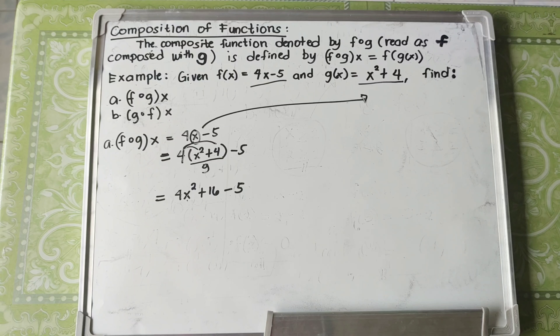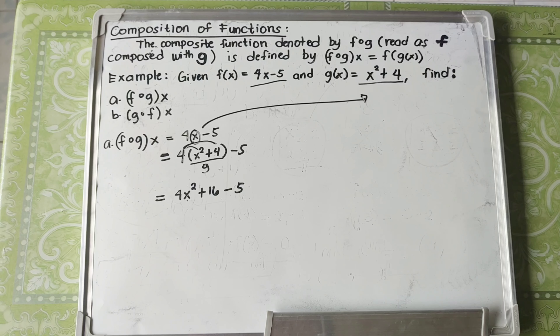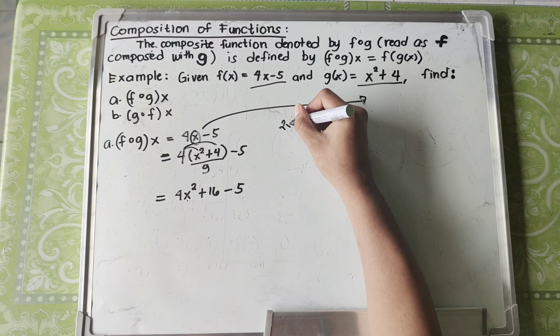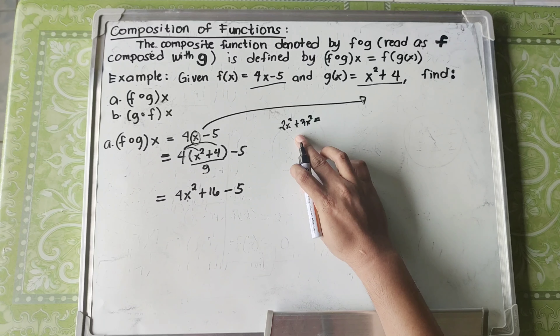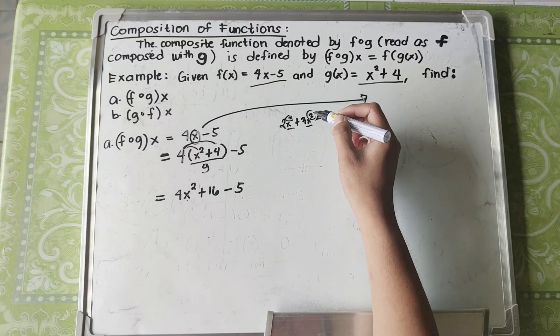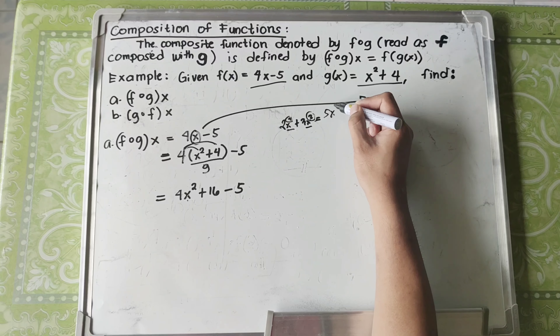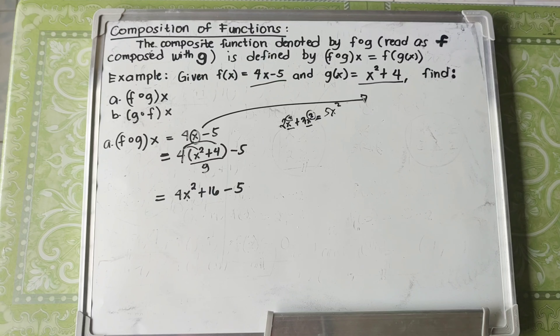Now we have what we call combining like terms. Always remember that we can only combine like terms if and only if they are similar terms — meaning they have the same variable and the same exponent. For example, 2X squared plus 3X squared: we can combine these because they are similar terms with the same variable X and the same exponent squared, giving us 5X squared.